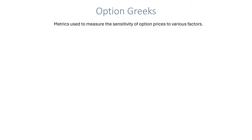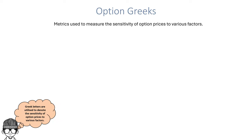So what are option Greeks? Option Greeks are metrics used to measure the sensitivity of the option price to various factors. The reason we call them Greeks is because Greek letters are utilized to denote the sensitivity of option prices to the various factors. In mathematical finance they are simply considered as the partial derivative of the option price with respect to the individual factors.